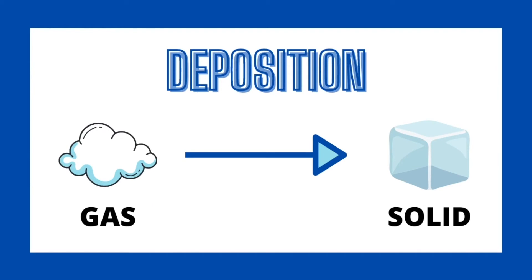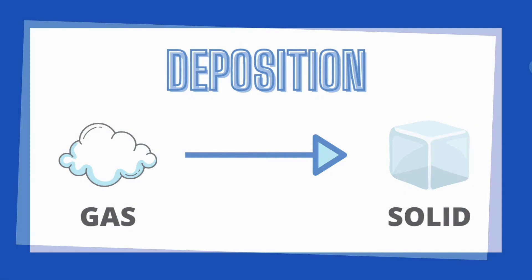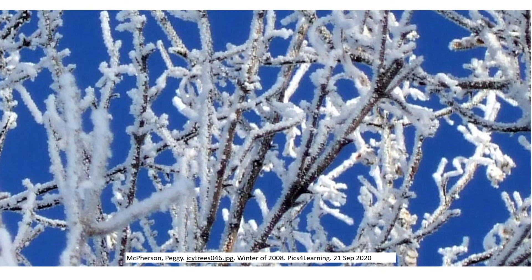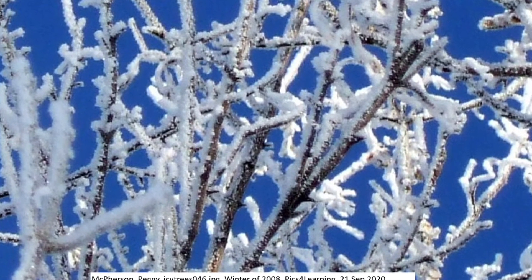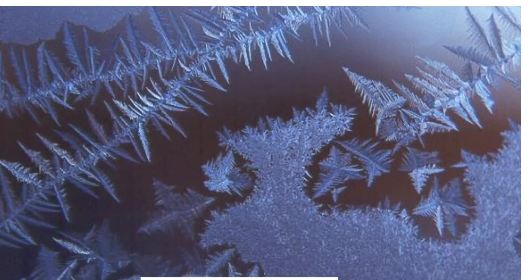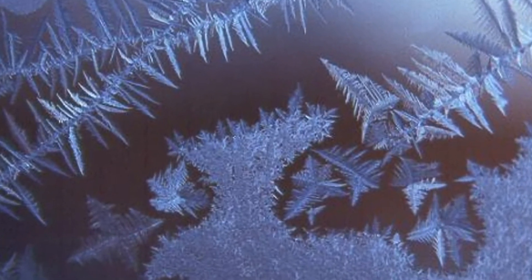Another unfamiliar term is deposition — the phase change from a gas to a solid. Deposition occurs when thermal energy is entirely removed from the gas. The air can get so cold that it transitions water vapor straight to ice without ever entering the liquid phase. One example of this occurring is frost. If you walk outside in the winter, you may notice that there is frost built up on the ground or on the windows of a car. That frost is a result of deposition.